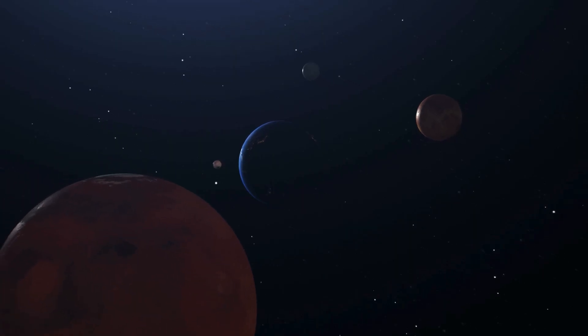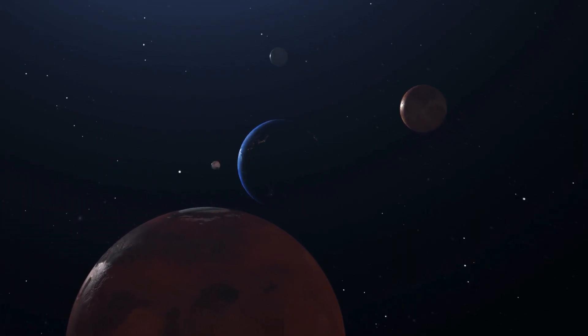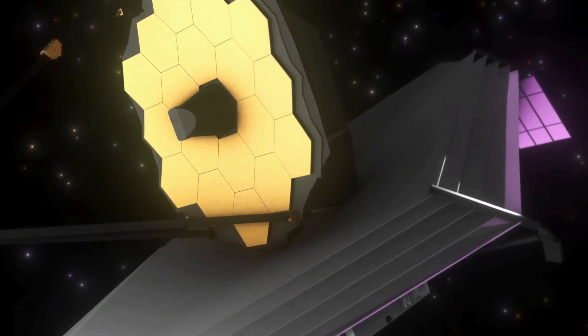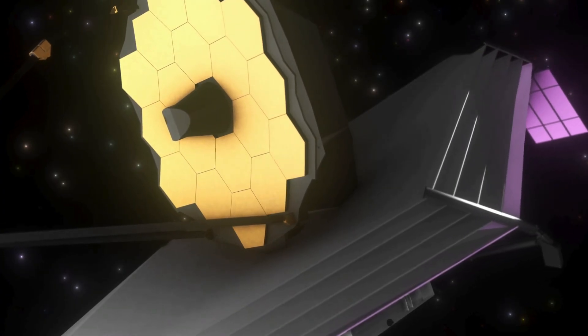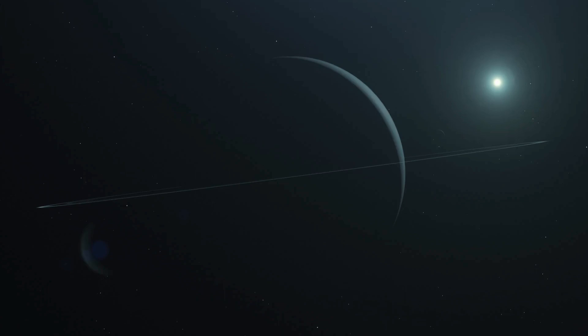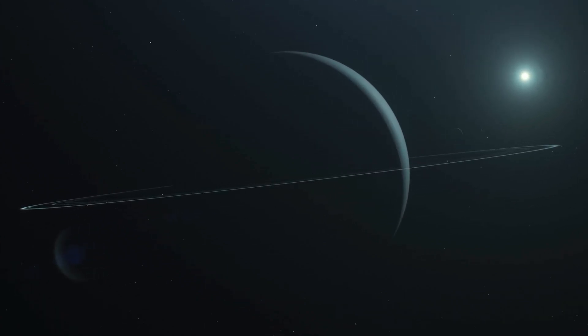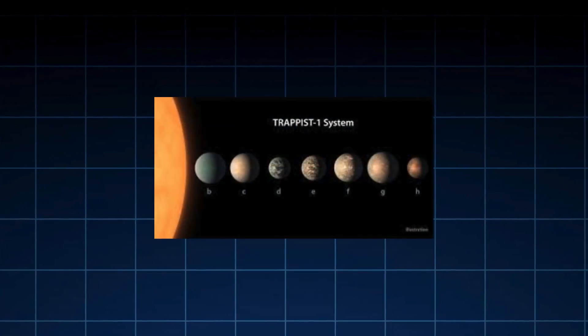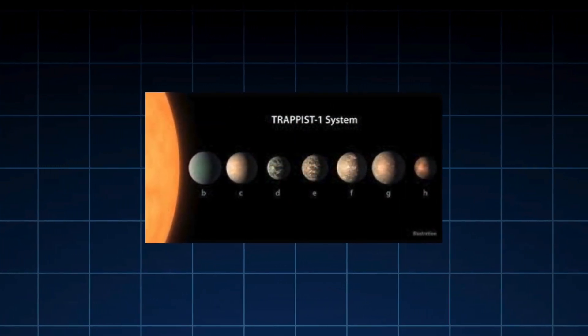Initially, data analysis found only the three innermost planets. But further observations from both TRAPPIST telescopes and the Spitzer Infrared Space Telescope raised the total to seven. And not only that, but they are all rocky and roughly Earth-sized, making this the most Earth-like planetary system found around any star.